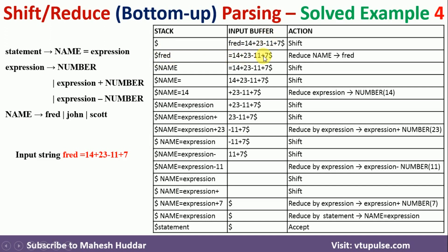Once fred is on the stack, we look at the stack top. Fred can be reduced to name because we have the rule name → fred. So fred is reduced to name, and the input remains as it is.